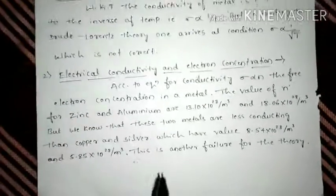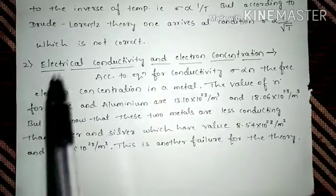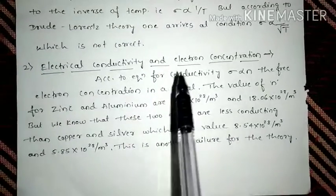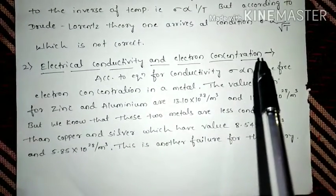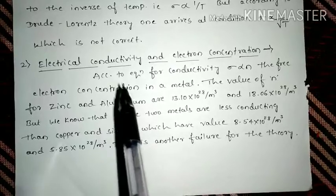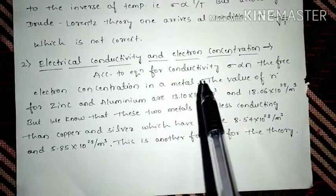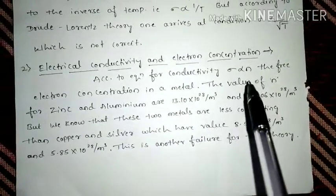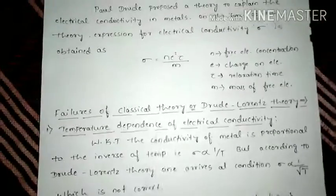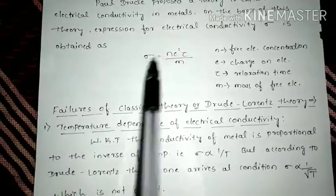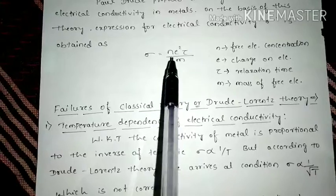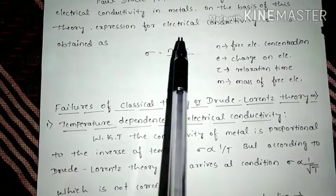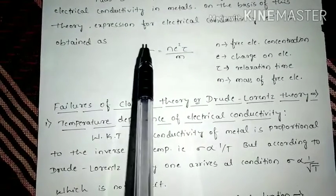Then, the second failure is electrical conductivity and electron concentration. Now, according to equation for conductivity, σ is directly proportional to n. So in this equation you can see, σ is directly proportional to n. As the number of electrons increases, the electrical conductivity increases.